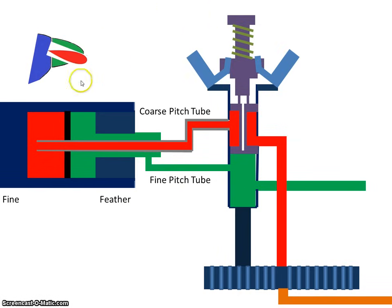Now, if the propeller goes to a more coarse position, that means the RPMs are going to reduce. When the RPMs reduce, there's going to be less centrifugal force acting on the flyweights here, so they're going to move back in.